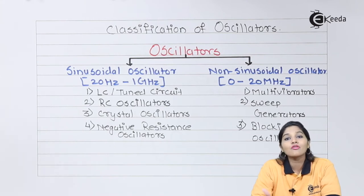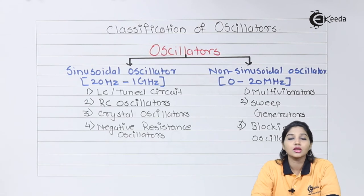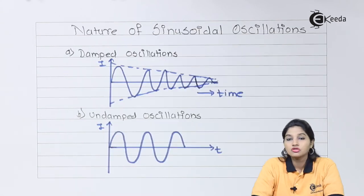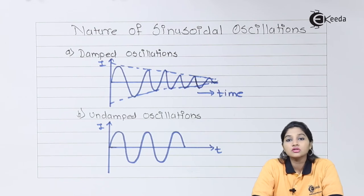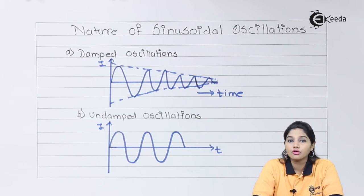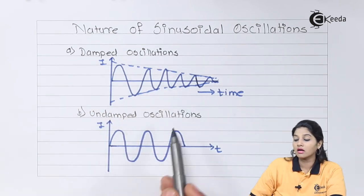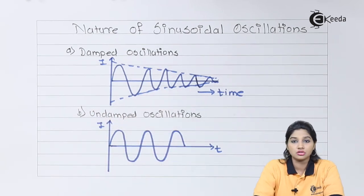Now let's see what type of sinusoidal waveform can be produced at the output of different types of sinusoidal oscillators. There are two types of waveforms produced: damped oscillations and undamped oscillations.